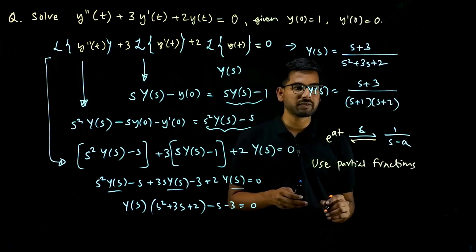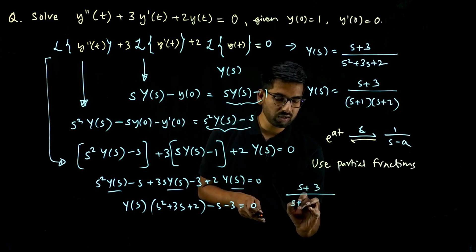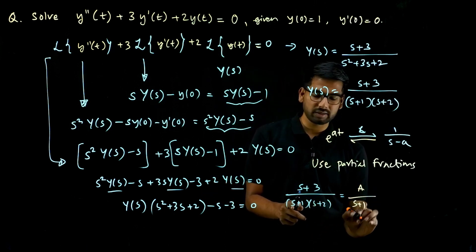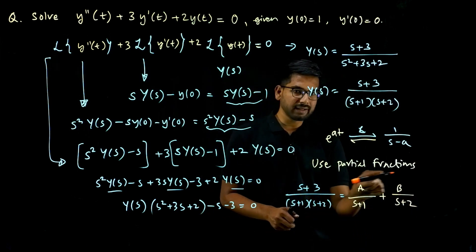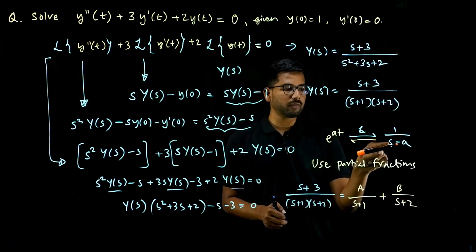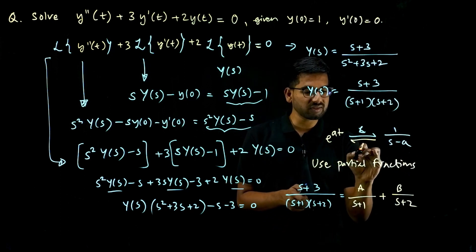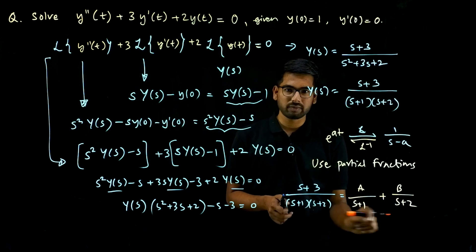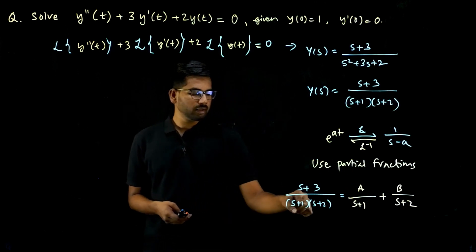Using partial fractions: (S + 3) / [(S + 1)(S + 2)] = A/(S + 1) + B/(S + 2). I can then take the inverse Laplace transform of each term, since I know the formula: inverse Laplace transform of 1/(S − a) is e^(at). So I need to find the values of A and B.